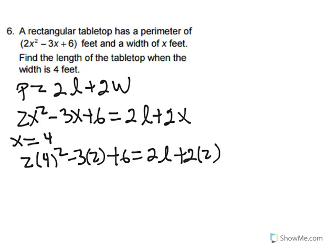So this gives us 32 minus—oops, this is a 4, so 12 plus 6 equals 2 times L. This also should be a 4, not plus 8.